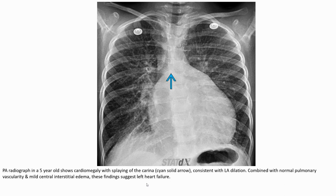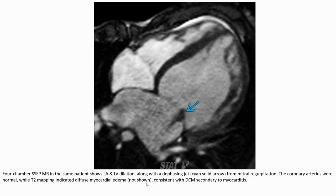On chest radiograph, cardiomegaly with splaying of the carina consistent with left atrial enlargement, combined with normal pulmonary vascularity and mild central interstitial edema; these findings are suggestive of left atrial dilatation. On MRI, left atrial and left ventricular dilatation along with displacement from mitral regurgitation. T2 may indicate myocardial edema, consistent with dilated cardiomyopathy secondary to myocarditis.